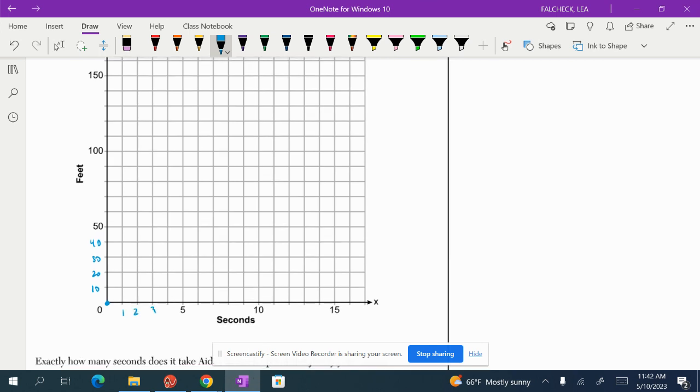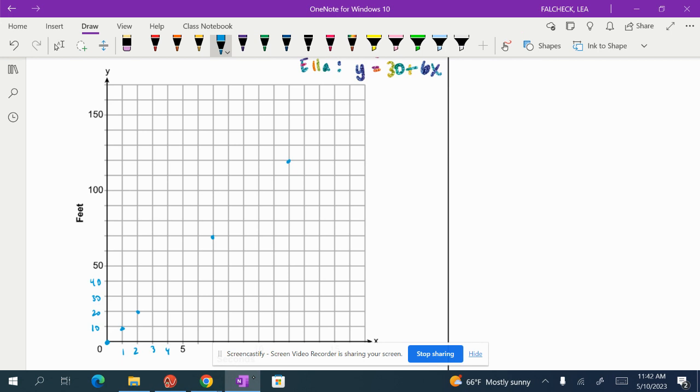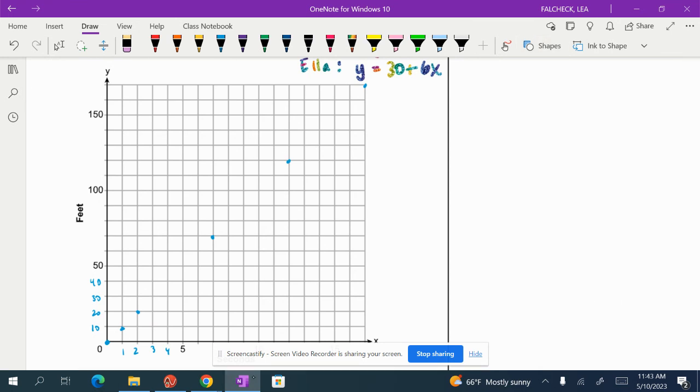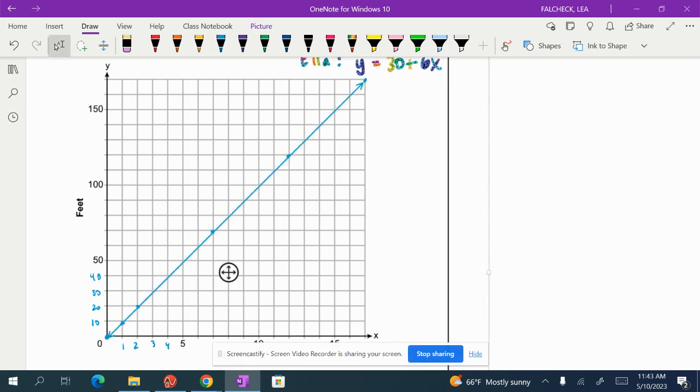And then over, what are these counting by? 1, 2, 3, 4, 5. Okay, so we've got up 10 over 1, up 10 over 1, and it's going to continue on like that. Okay, so the line looks something like this. There we go. Okay, and I'm going to label this y equals 10x.